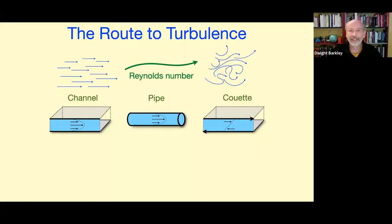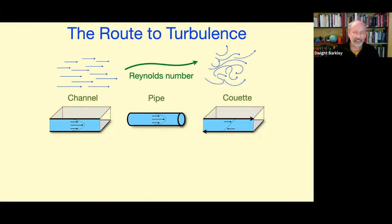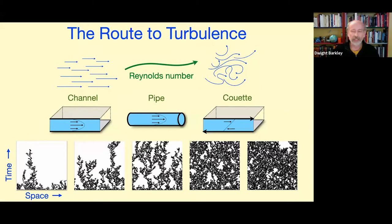Thank you, and I want to thank the organizers not only for the kind invitation but for organizing this series. We've come to really look forward to these seminars on Friday afternoons, and I want to thank Steve personally for his patience and help in getting set up for this talk. What I'm going to discuss today is the route to turbulence in wall-bounded shear flows. Over the past approximately 20 years, but particularly the past 10 years, there's been a fundamental paradigm shift in our understanding of how these flows become turbulent as you increase Reynolds number.